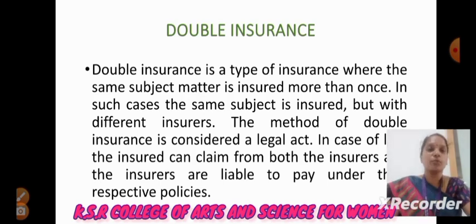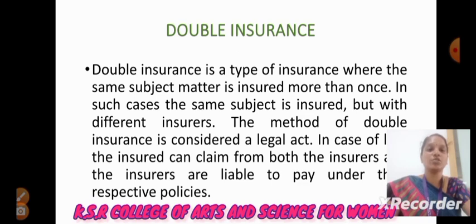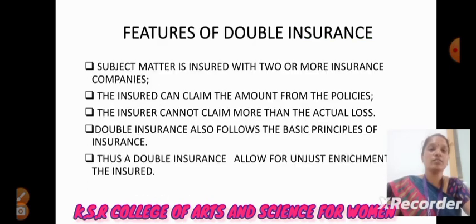Next, we are going to see about double insurance. Double insurance is a type of insurance where the same subject matter is insured more than once. In such cases, the same subject is insured but with different insurers. The method of double insurance is considered a legal act. Features of double insurance: The subject matter is insured with two or more insurance companies. The insured can claim the amount from the policies. The insurer cannot claim more than the actual loss. Double insurance also follows the basic principle of insurance. Thus, double insurance does not allow for unjust enrichment of the insured.